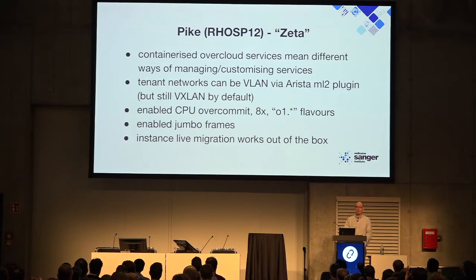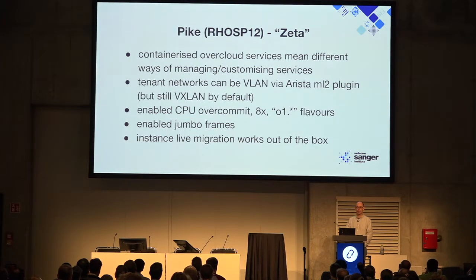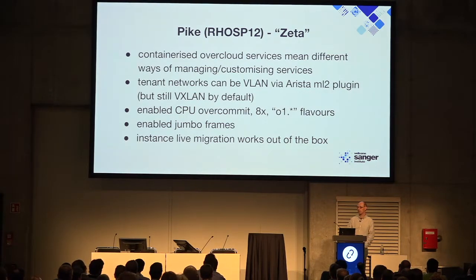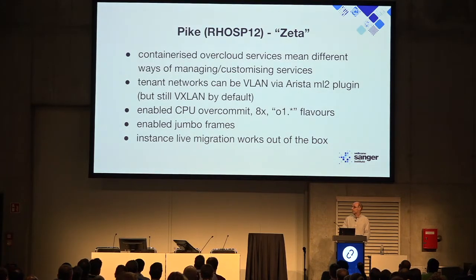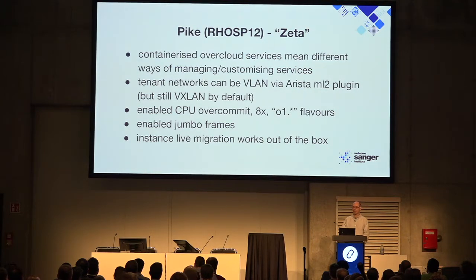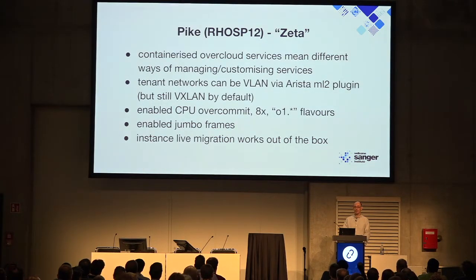We enabled jumbo frames, which solved problems around Docker and encapsulation overheads, but brought some ugly corner cases because the rest of the Sanger internal network does not have jumbo frames on. And for me personally, one of the biggest time savers: instance live migration works out of the box in Pike. That's a brilliant win — you say 'Nova, evacuate host', come back in five minutes, and the instances are gone, they're somewhere else.